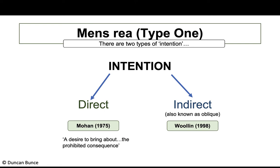This is significant because if murder is proven it carries a mandatory, automatic life sentence. The judge has no discretion. Whereas the absence of mens rea for murder would result in involuntary manslaughter — also known as constructive manslaughter — where the judge has discretion over sentencing. It could be a life sentence, considerably less, or no time in prison at all.